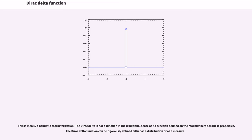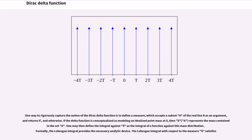The Dirac delta function can be rigorously defined either as a distribution or as a measure. One way to rigorously capture the notion of the Dirac delta function is to define a measure which accepts a subset A of the real line R as an argument, returning 1 if 0 is in A, and 0 otherwise. If the delta function is conceptualized as modeling an idealized point mass at zero, then delta of A represents the mass contained in the set A.